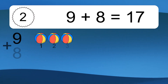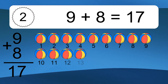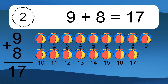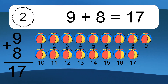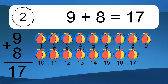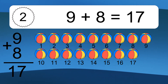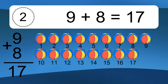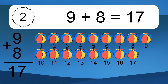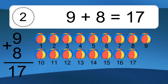9 plus 8 equals what? 9 plus 8 equals 17. Let's count it: 1, 2, 3, 4, 5, 6, 7, 8, 9, 10, 11, 12, 13, 14, 15, 16, 17.